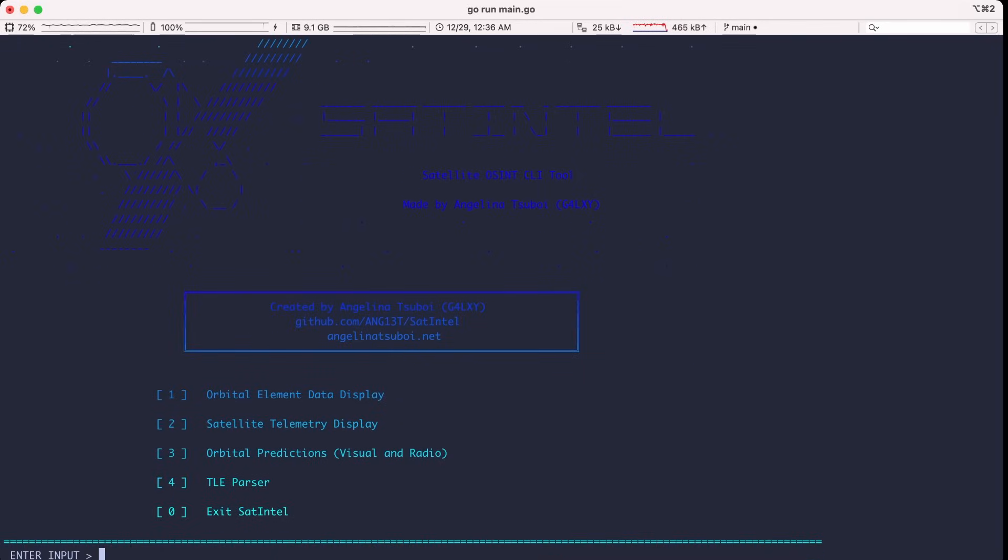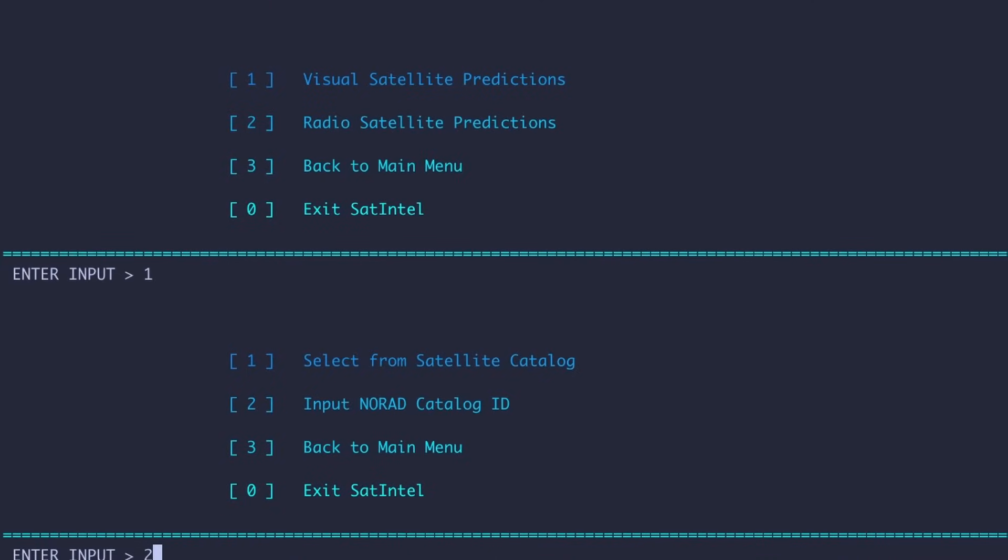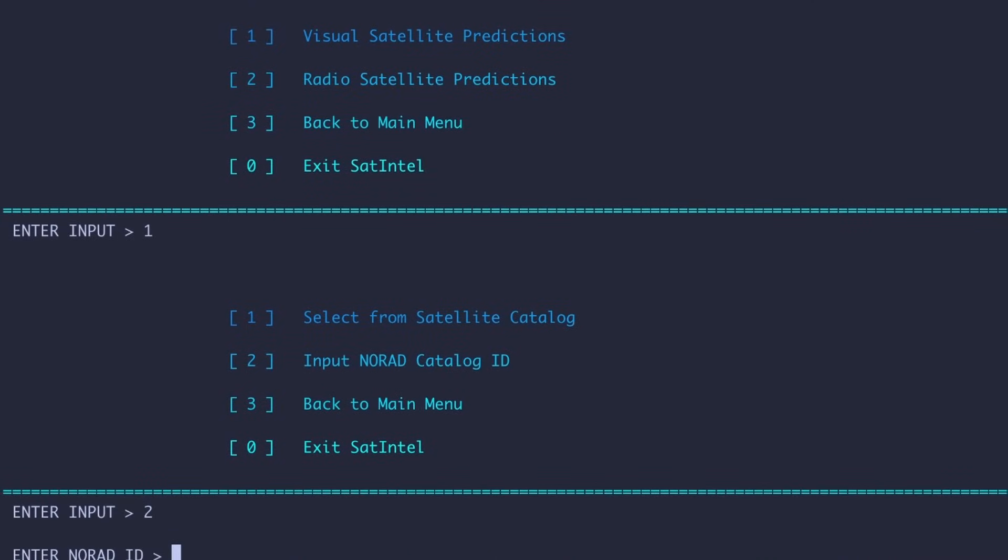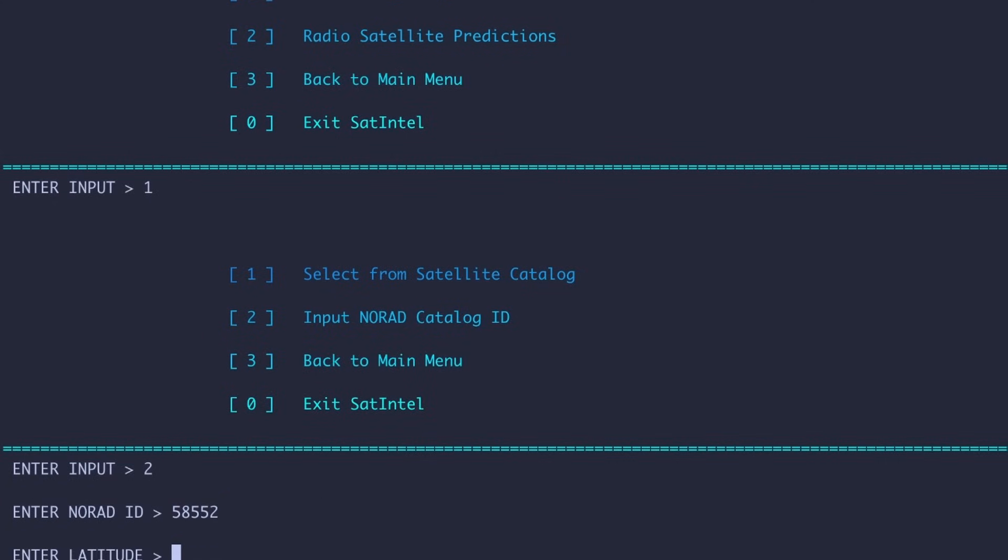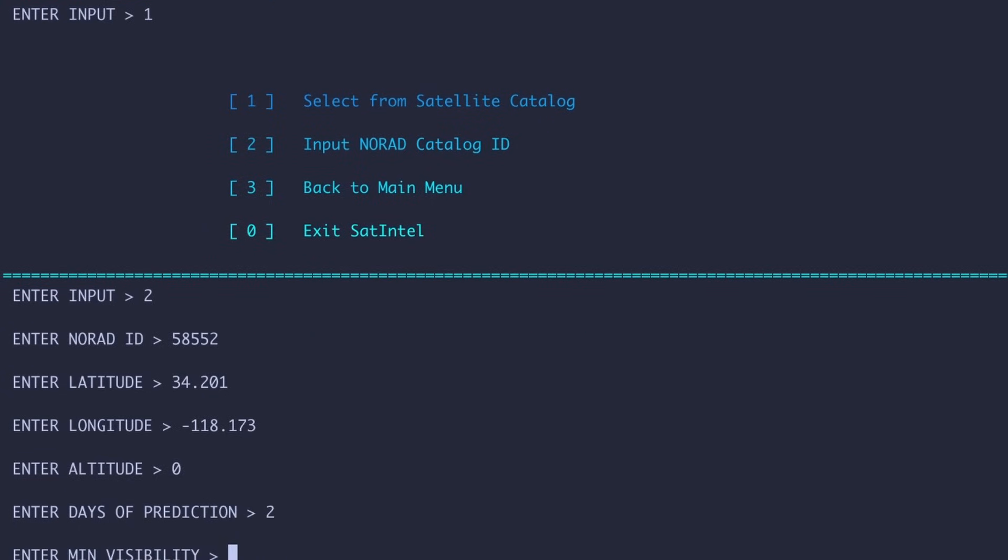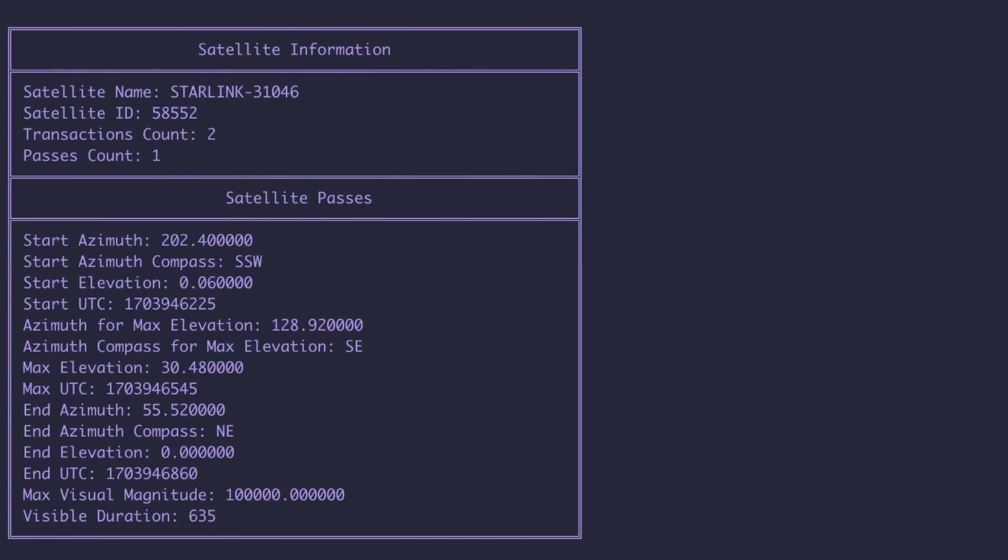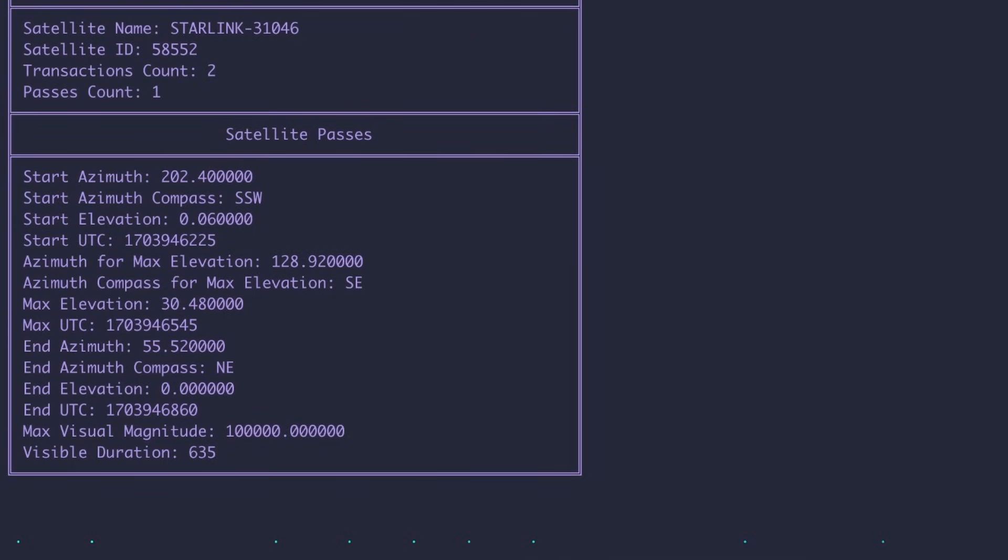You can also use this tool for orbital predictions. So to use that, you're going to type in 3. You can do visual predictions and radio predictions. Visual is when you can actually see the satellite. Radio is when radio communication devices can detect for the satellite in the air. We're going to be using visual in this case and 2 for NORAD catalog ID. I could enter in the same NORAD ID from before, 58552. I'll just use the same latitude and longitude. Altitude can be 0. Days of prediction, I'll just put in 2 days. Visibility 500. And this will give you a catalog of when that satellite would pass over given the details. It'll give the azimuth, the compass azimuth, time of the pass, end of the pass, and the visual magnitude, as well as the duration.